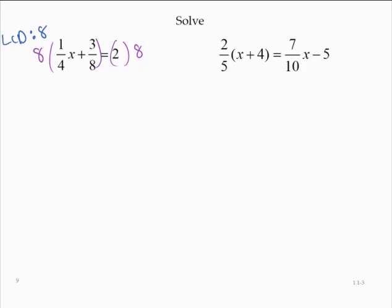Applying the distributive property, I would have 8 times 1/4 x plus 8 times 3/8 is equal to, and on the right-hand side, 2 times 8 is 16.